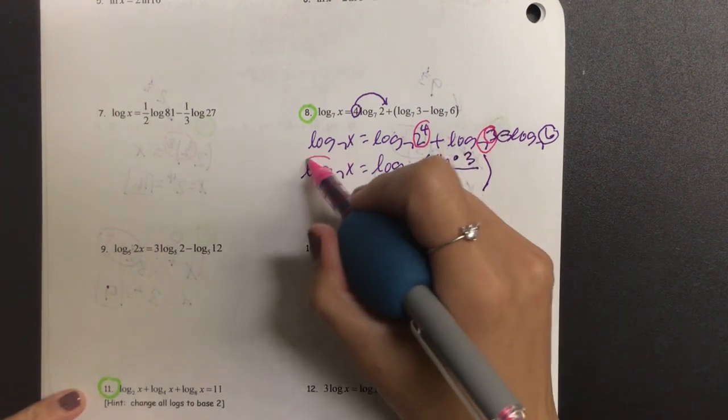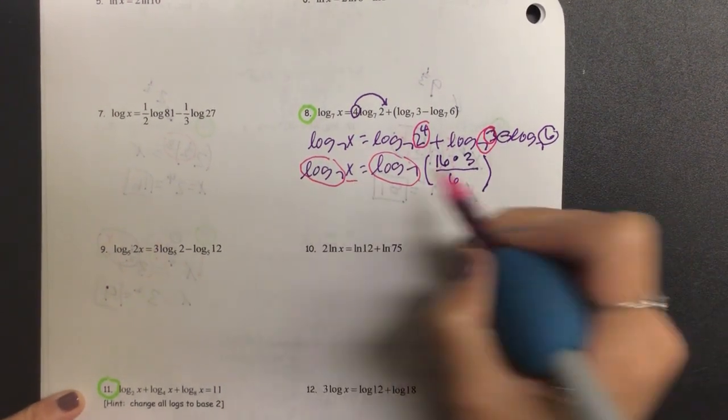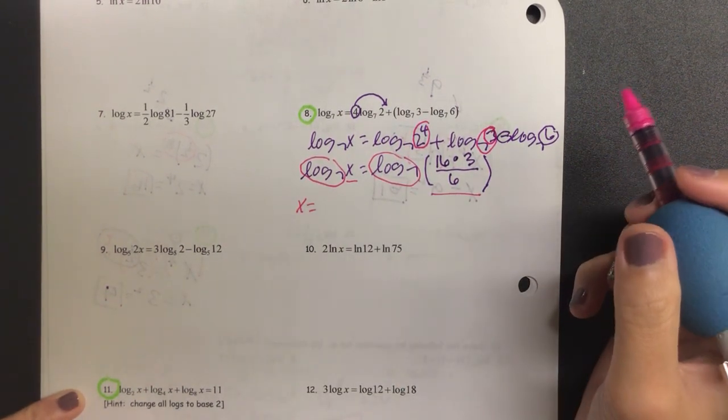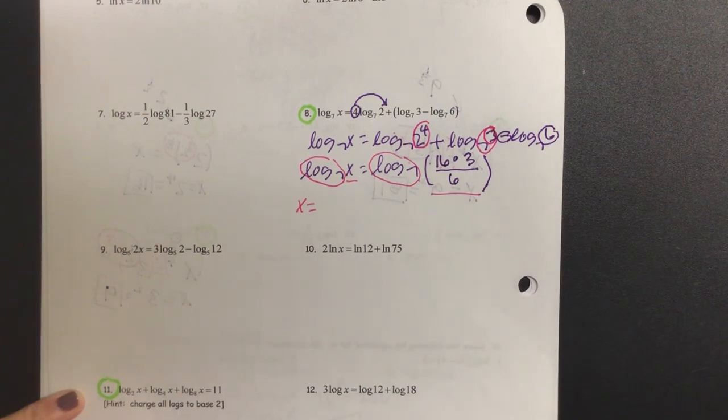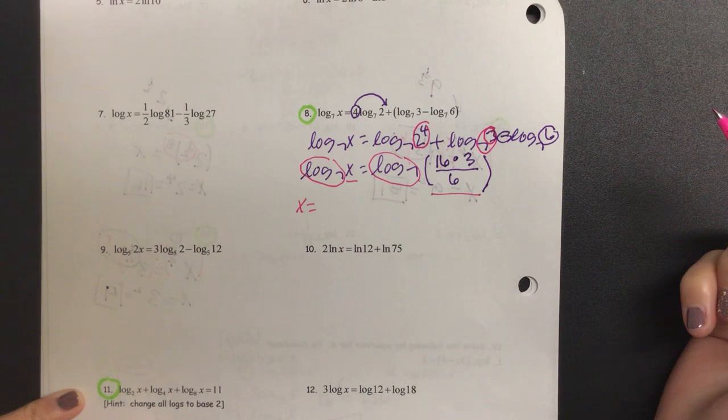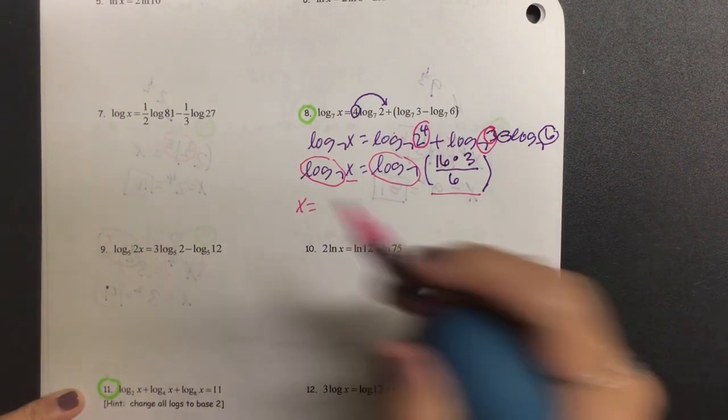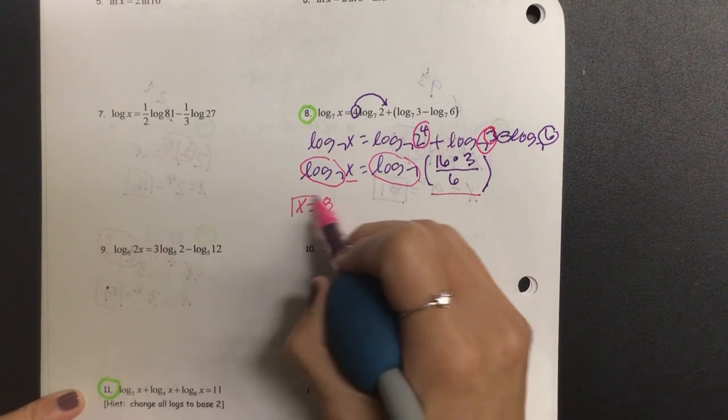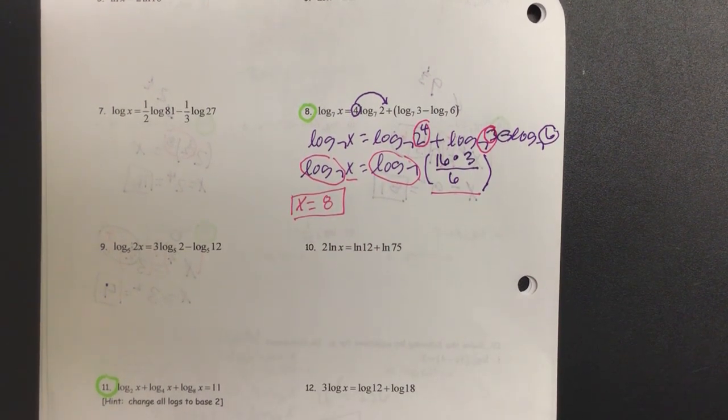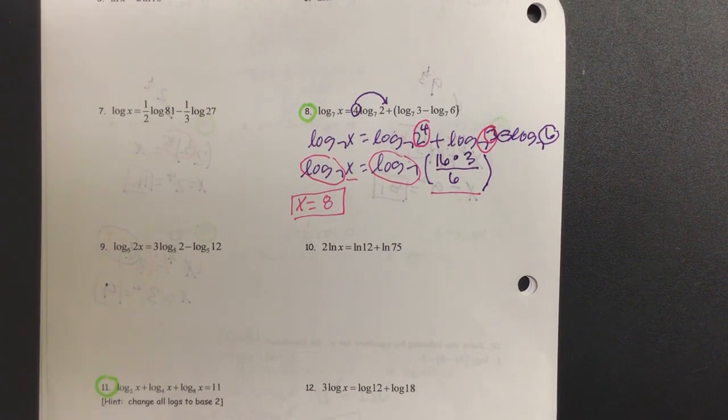Now we have condensed and we have the same log and same base. I could set the remaining to each other, the arguments. X equals, could we simplify while we're at it? What is 16 times 3? 48. 48 divided by 6? 8. Done. So you have to condense as much as you can until you get a single log on the left and the right, and then you set the argument equal to each other.